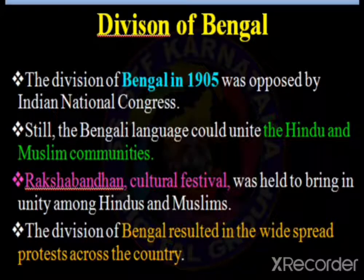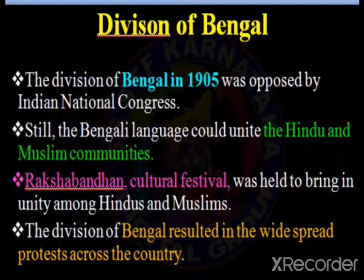The division of Bengal in 1905 was opposed by the Indian National Congress. Even though many leaders opposed the division of Bengal, the Bengali language could unite the Hindu and Muslim communities. Bengali language was uniting the people of Bengal. It was also opposed by Congress leaders and other leaders. For uniting Hindus and Muslims, Rakshabandhan and cultural festivals were held to bring unity among them.